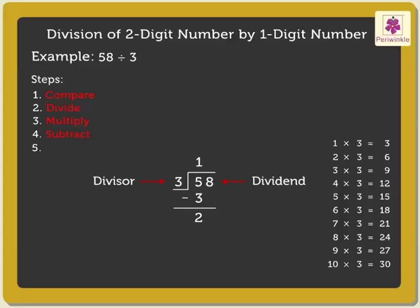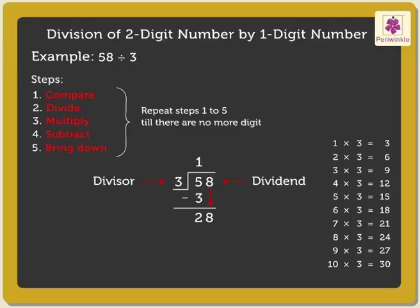Step 5 is to bring down the next digit, that is 8. Now, we shall repeat steps 1 to 5 till there are no more digits to bring down. So, here we again compare 28 and 3.